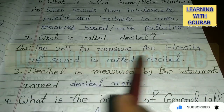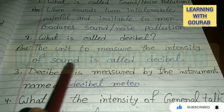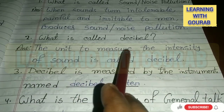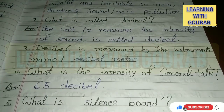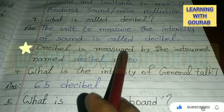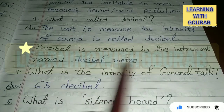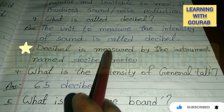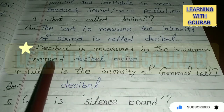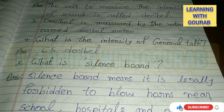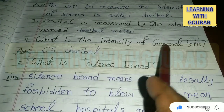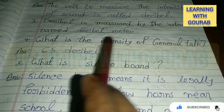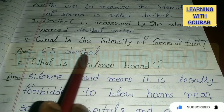Next question: What is called a decibel? Answer: The unit to measure the intensity of sound is called a decibel. Next: Decibel is measured by the instrument named — the decibel meter.